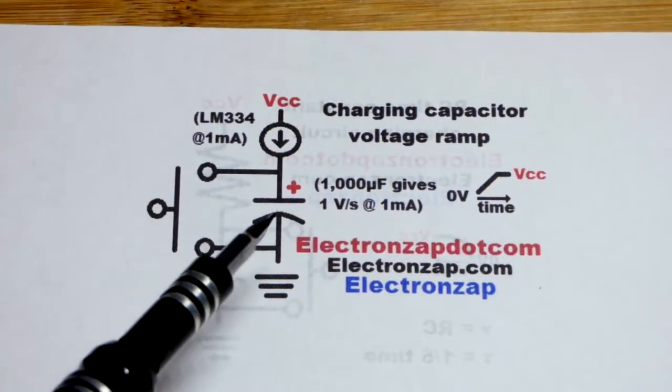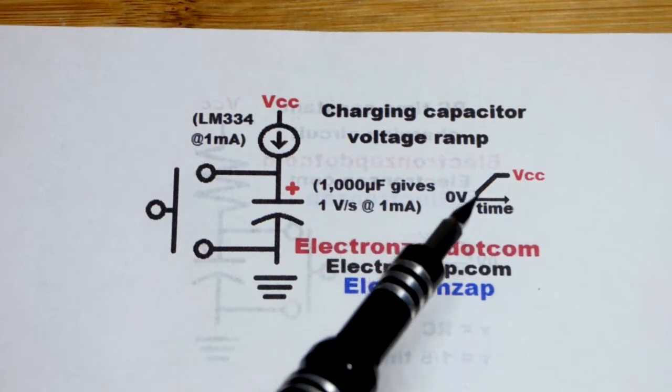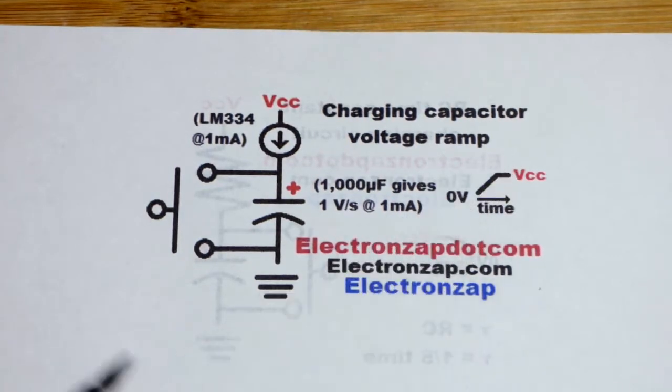So now in this video we're going to use the capacitor while it's charging to make a voltage ramp. So the voltage will look like this. It will steadily rise over time.